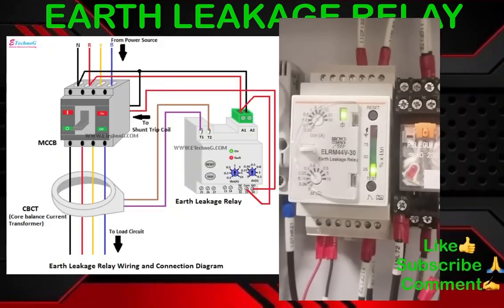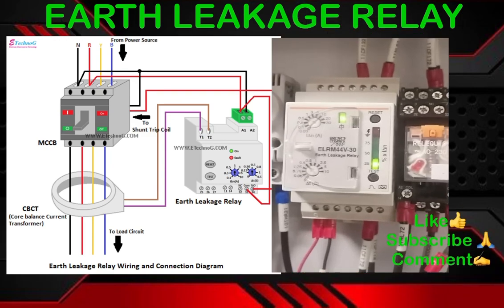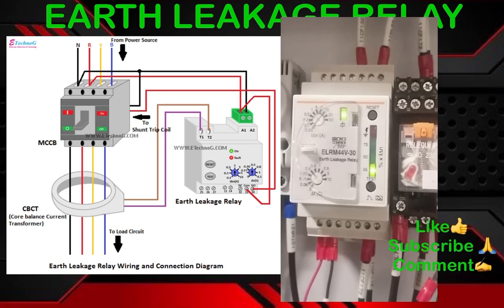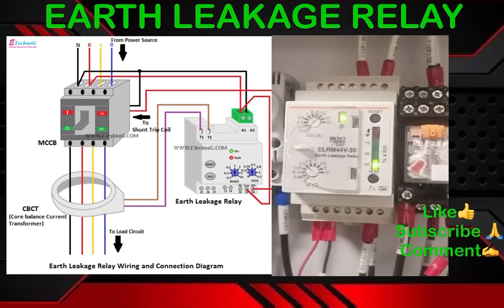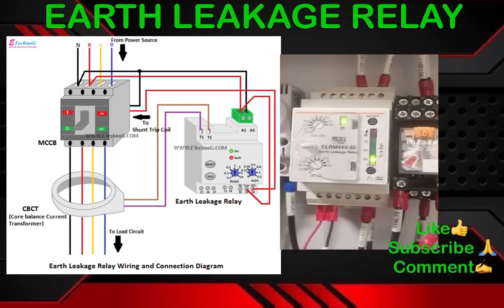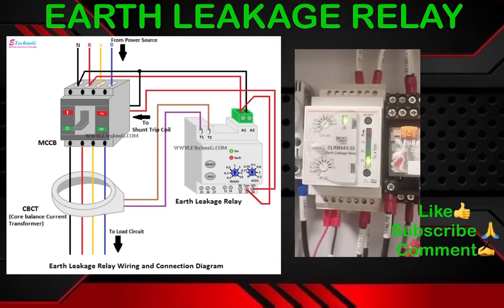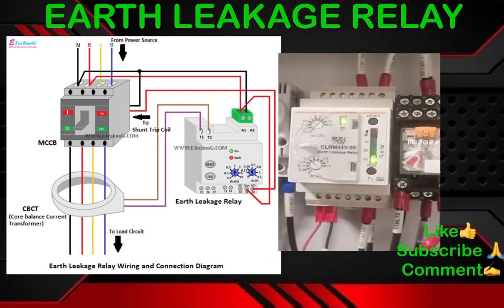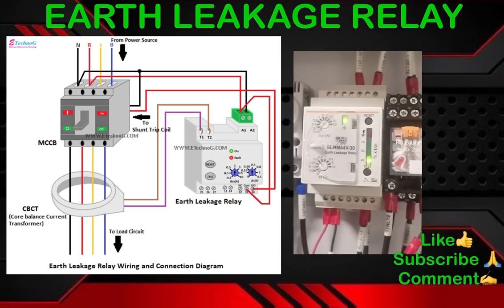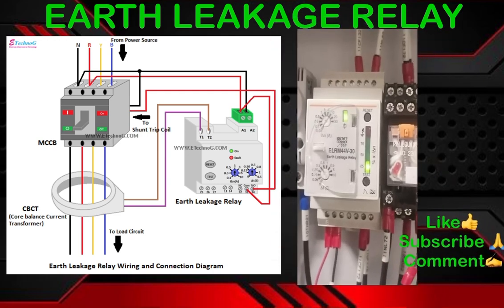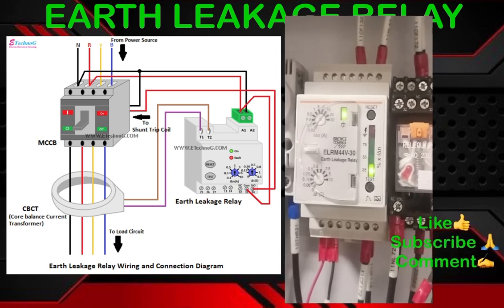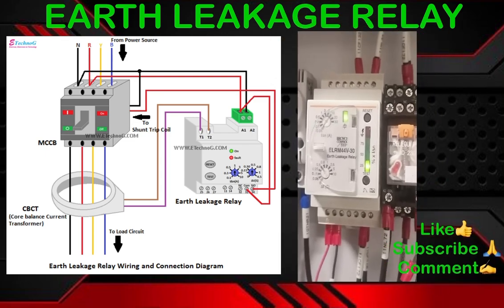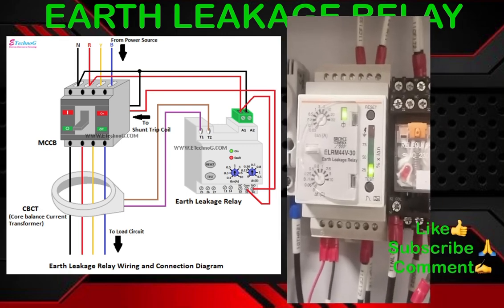Now we will discuss the electrical wiring connection. On the left side you can see the wiring diagram, and on the right side is the earth leakage relay. In the CBCT, all four cables — three phases and neutral — pass through it. Two output cables from the CBCT connect to the earth leakage relay. The auxiliary supply of 230V from phase and neutral connects to the auxiliary terminals. The two bottom cables connect to the shunt coil, so if earth leakage occurs, the shunt coil is energized and the breaker trips.